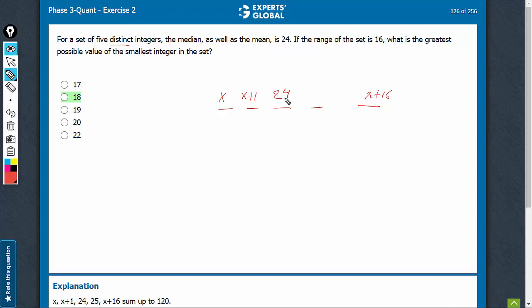The smallest value here can be just above 24. It can be 25. Mean is 24, and therefore sum of the 5 terms is equal to 120.